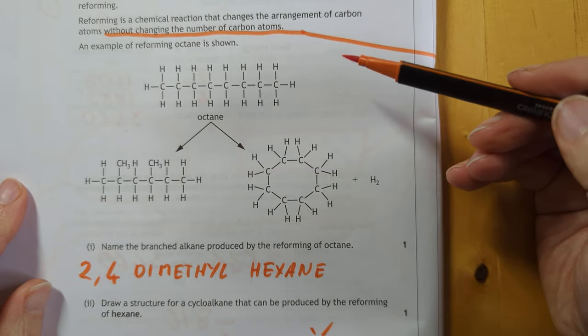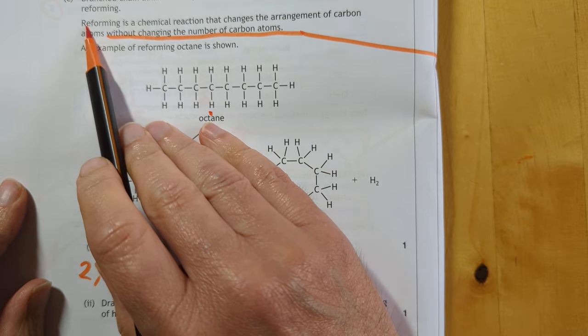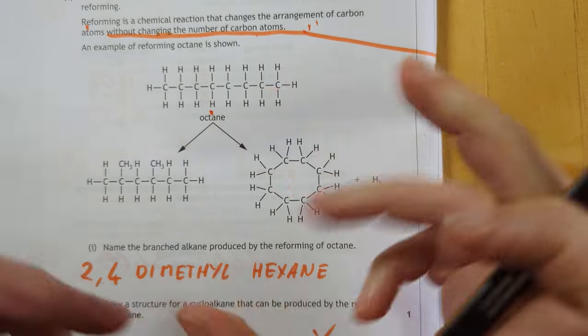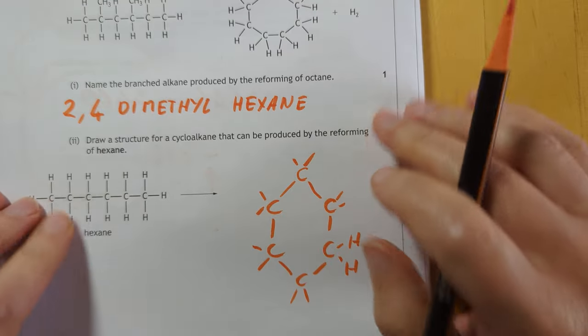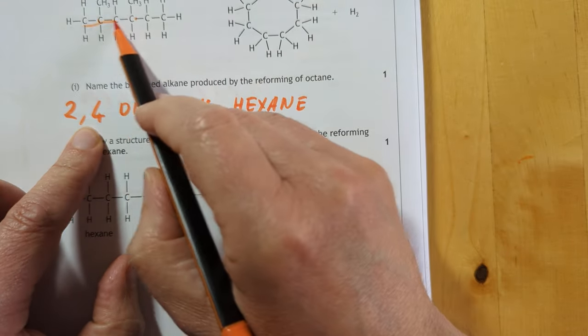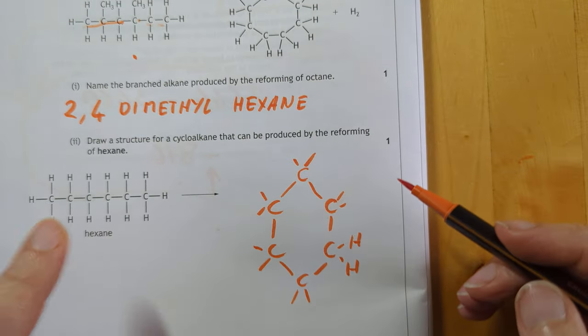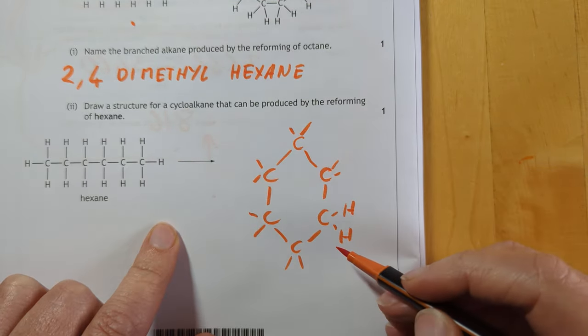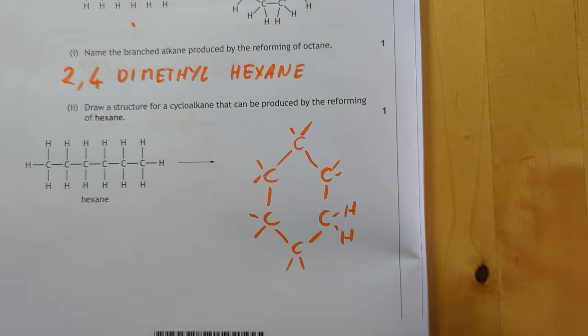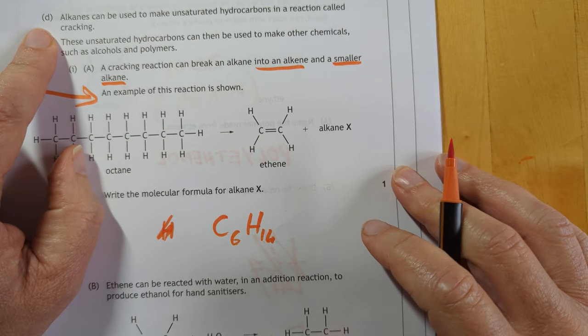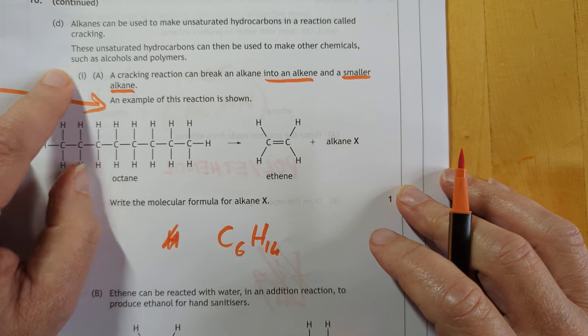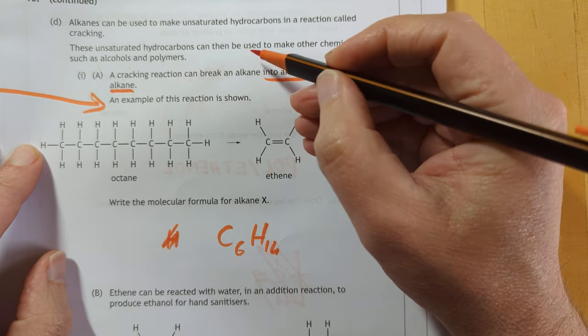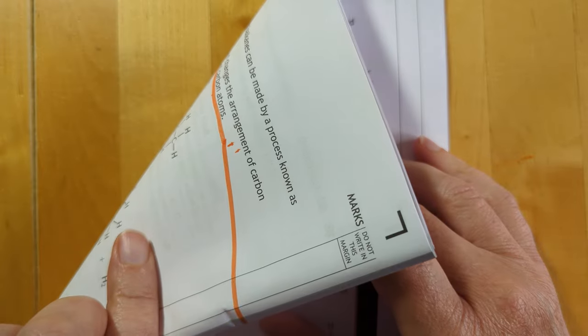Another problem-solving one. This time, based on organic content, we've got octane is being reformed. And it does say here, reforming is a chemical reaction that changes the arrangement without changing the number of carbon atoms. So you can do that with it, or you can curve it around on itself into this nice octagon structure. Got to name this one. So that is 2,4-dimethylhexane. 1, 2, 3, 4, 5, 6. 2,4-dimethylhexane is the proper name for that one. Do the same with this one into a cycloalkane. You've only got six carbons. It says up here you have to keep the number of carbons the same. So you're going to get cyclohexane. I was too lazy to put the other H's on. You will have to do that.